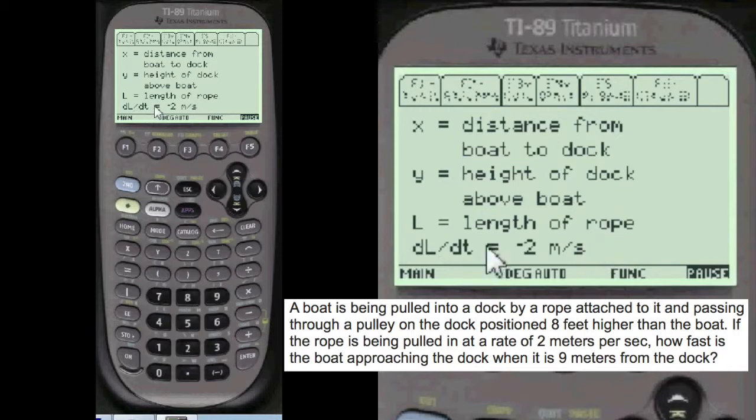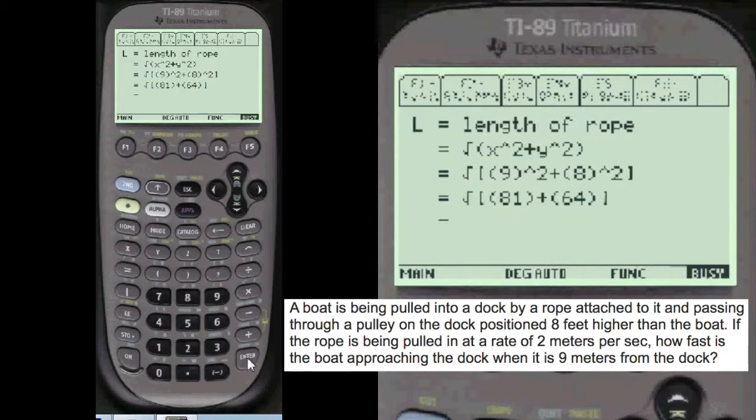And of course, dL/dt is the rate of change of minus 2 meters per second given. So we find the length of the rope, which is equal to the square root of 145. Pythagorean theorem.